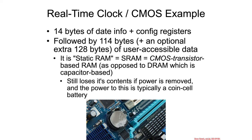The device we want to look at now is called the real-time clock or CMOS, going way back to some of the original PCs. It has 14 bytes of date information — that's the clock side — plus a few configuration registers we won't care about. After that, there are 114 bytes of arbitrary SRAM that any operating system, BIOS, or anyone with port IO capabilities can use freely. That was later expanded with an additional 128 bytes.